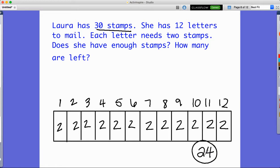So Laura's going to need 24 stamps. Now the first part of this problem, I can model this with a multiplication problem. So I'm going to say our 12 letters times two stamps each equals 24. Now that's not the end of the problem. It does answer the question, does she have enough stamps? So that answer is yes, she does.